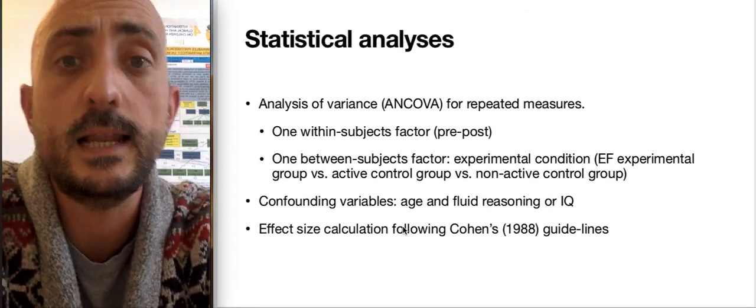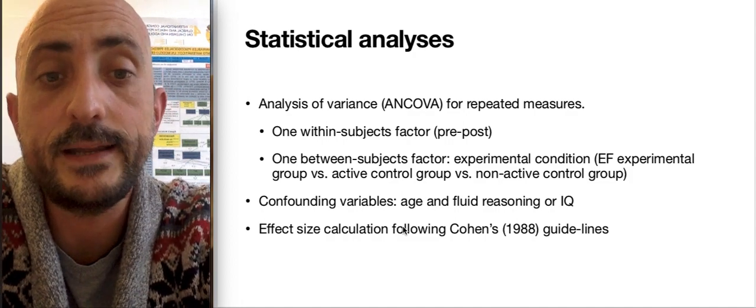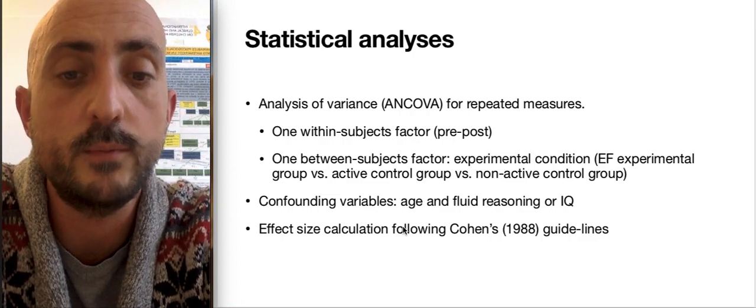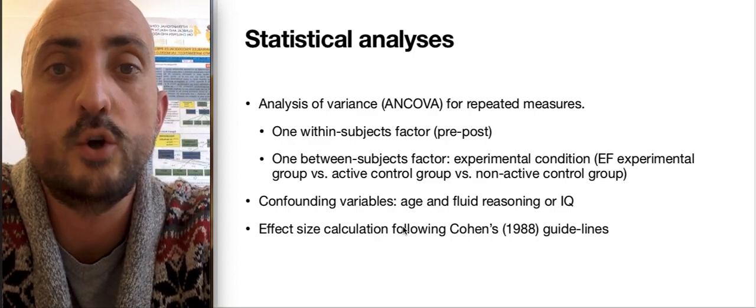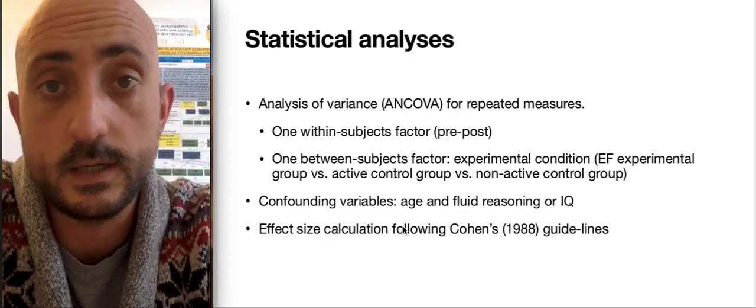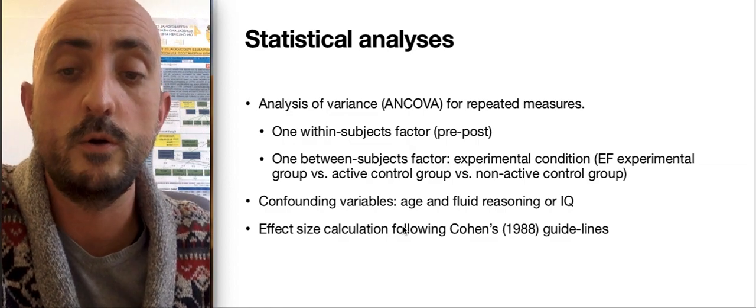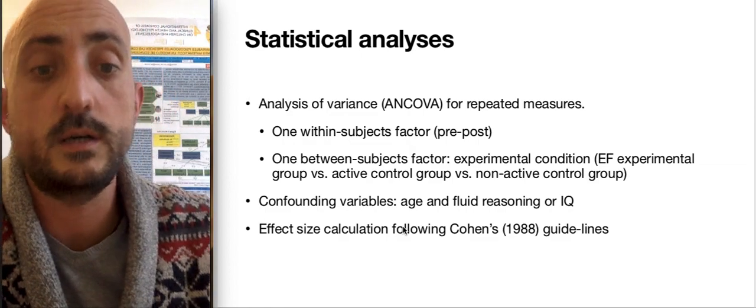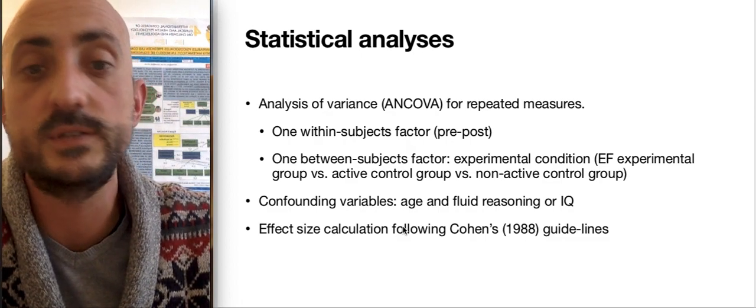The statistical analyses are going to be performed with analysis of variance or covariance because we want to control for confounding variables, as I have mentioned before, or maybe we are going to use also multilevel analysis, depending on the better analysis that we can do. And we are going to perform effect size calculations following the standard guidelines that are usually used in this kind of studies.